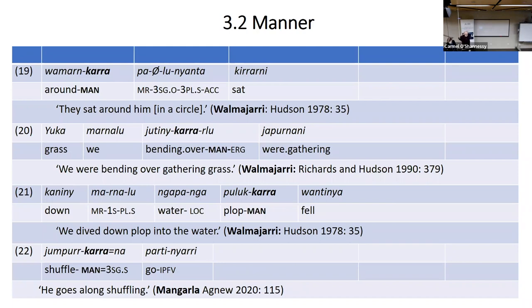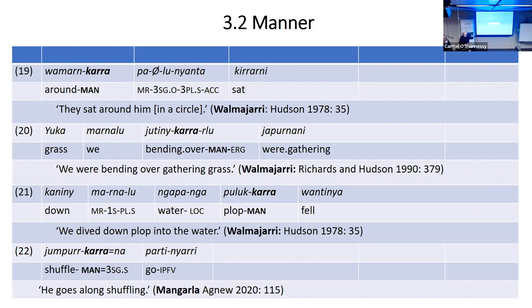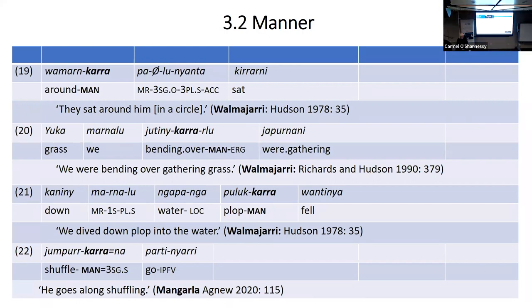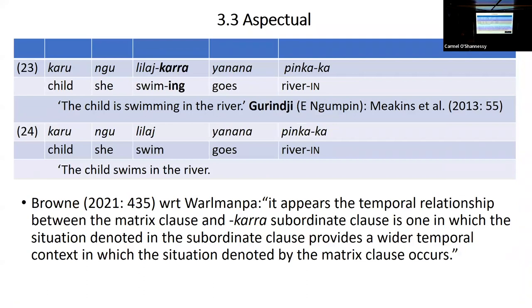The origin should be looked for in a nominal word. Many languages have a suffix -kara added after something indicating a manner. In Mudburra it's a kind of disposition — sitting around or bending over while gathering — indicating some characteristic of the action. Or it's almost like an ideophone: 'it fell with a clop' or 'it goes around shuffling.' This is probably why it's called 'manner' in some of these languages.